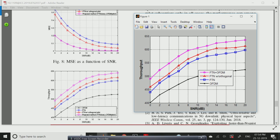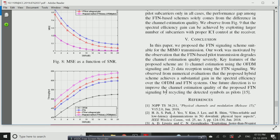The conclusion of the paper: In this paper we proposed the FTN signaling scheme suitable for MIMO transmission. Our work was motivated by the observation that the FTN-based pilot transmission degrades the channel estimation quality severely. The key features of the proposed scheme are channel estimation by using OFDM signaling and data reception using FTN signal. That's why our proposed algorithm is both FTN plus OFDM signal, that is the magenta color. We observed from numerical evaluation that the proposed hybrid scheme achieves substantial gain in spectral efficiency over the OFDM and FTN systems. One future direction is to improve the channel estimation quality of the proposed FTN signaling by recycling the detected symbols as a pilot.